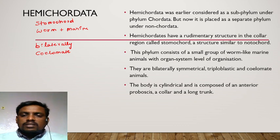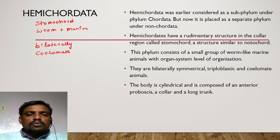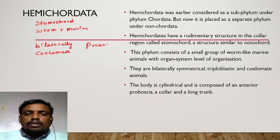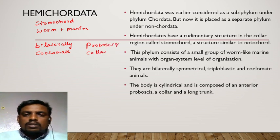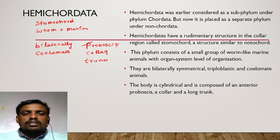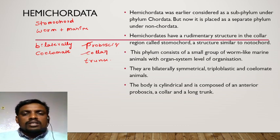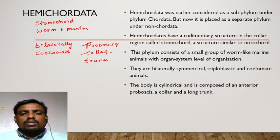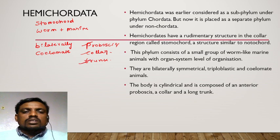The body is cylindrical and divisible into three regions: an anterior proboscis, a collar region, and a trunk. The stomochord, which is the rudimentary structure, is present in the collar region, located just below the anterior proboscis. Below the collar region, the trunk is present.